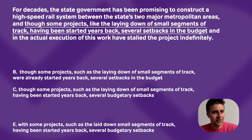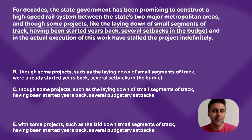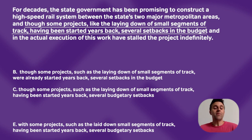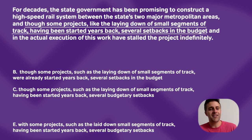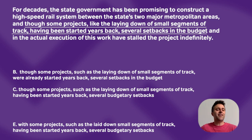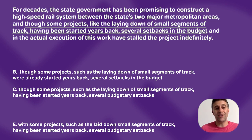Now, what do we look at next? We're not going to focus on the laying down of small segments of track. We're going to look for something else that's different between B, C, and E. I notice "were already started" versus "having been started" — so this is a verb tense issue. These can sometimes be a good way to approach the question, but aren't always clear cut. So, we keep reading and get to where it says "several setbacks in the budget" versus "several budgetary setbacks." Answer B has "several setbacks in the budget" and C and E both have "several budgetary setbacks." It looks like concision versus wordiness, and the GMAT loves concision — the shorter version is better.